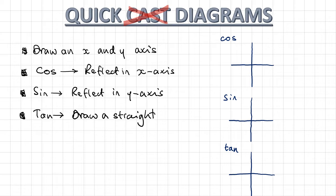You start by drawing an x and y axis. If you're solving a trig equation for cos, you find the first solution angle on your calculator. Then you reflect that line in the x axis. These angles are going to be the same angle.